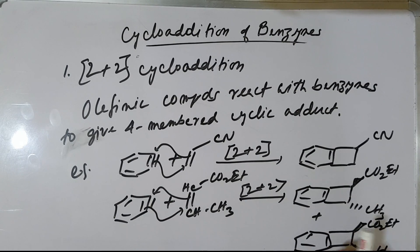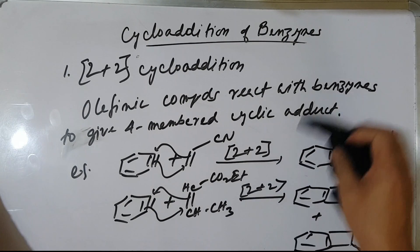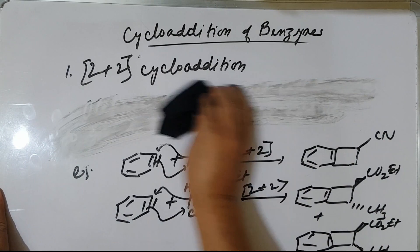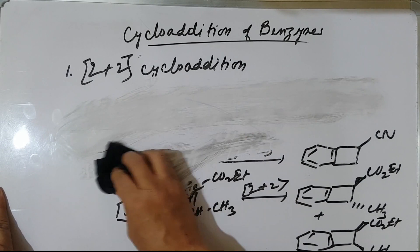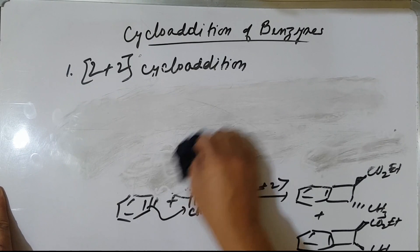Another example of 2+2 cycloaddition: benzynes can react with benzene as well. Most of the times, when the 2+2 cycloaddition occurs, it can undergo further ring expansion. I'm giving one example — ring expansion sometimes can take place.